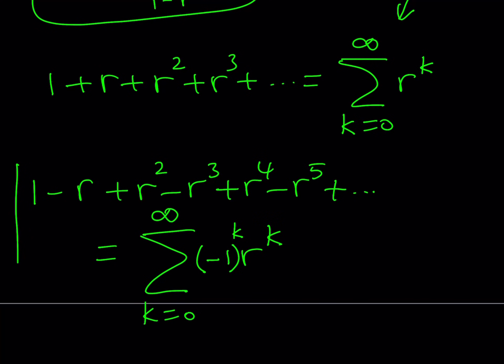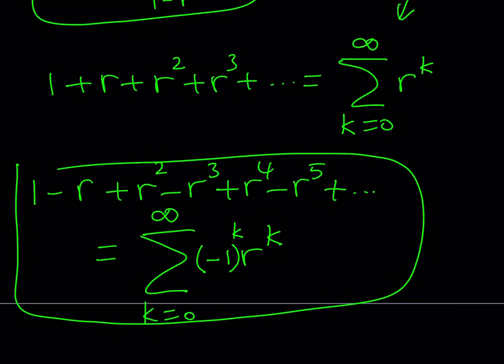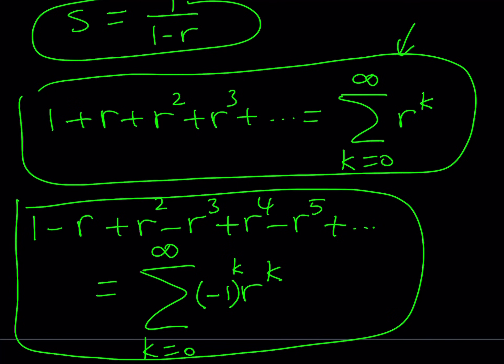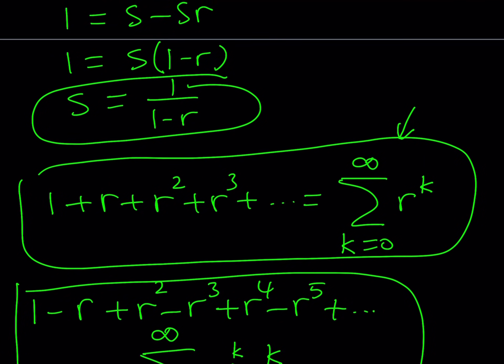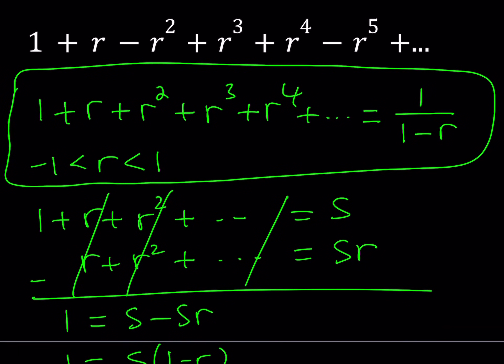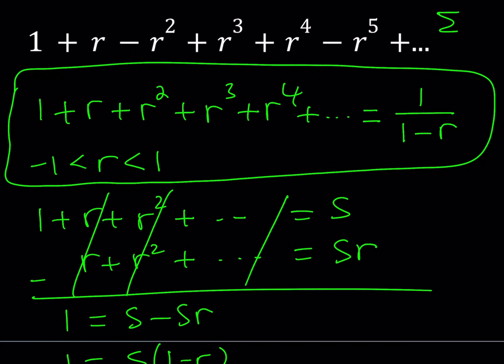My challenge for you: can you express the original problem using sigma notation? Is there a way to modify the sigma expression so that every third term comes with a negative sign but everything else is positive? Please write your answer in the comment section.